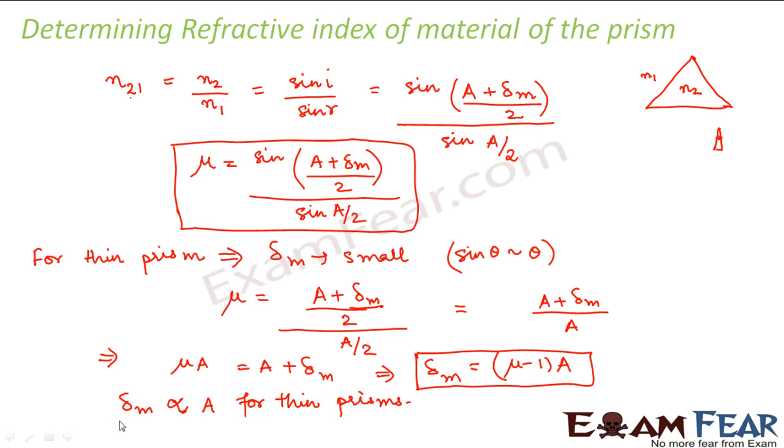Therefore, thin prisms do not deviate light much because angle of prism is very small for thin prisms. Therefore, the angle of deviation is also very small. So they do not deviate light much.